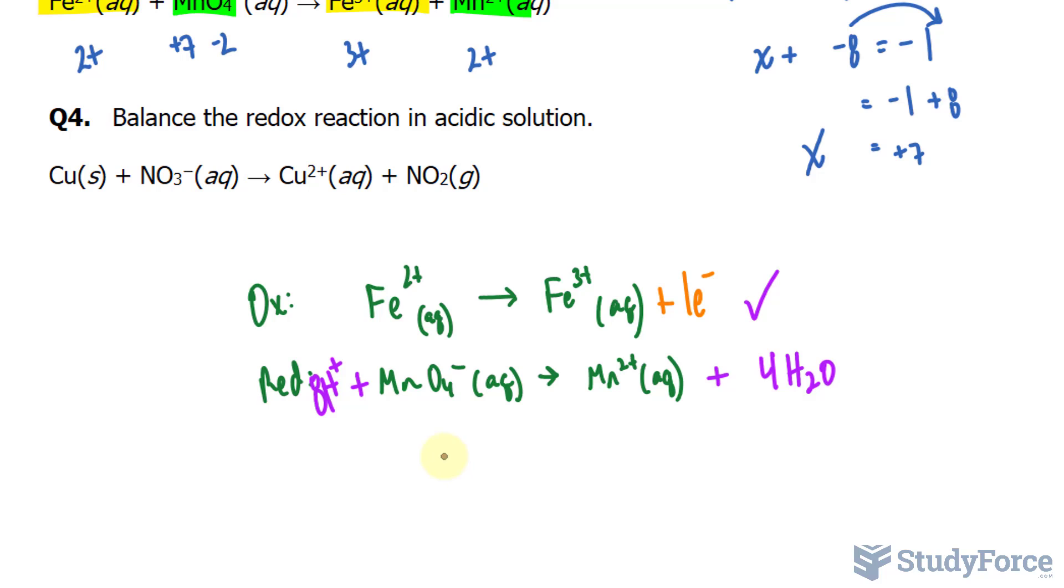At the bottom, since we said that there is a charge of 7 here and a charge of 2 here, I can add 5 electrons on the left side of the reduction equation. Let me write this out clearly for you.